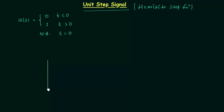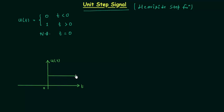So let's plot the waveform of the unit step signal. When time t is less than 0, u(t) is equal to 0, and when time t is greater than 0, u(t) is equal to 1. So we have 1 as the value of u(t) when time t is greater than 0. When t is equal to 0, u(t) is not defined. This is the waveform of the unit step signal, and for simplicity we consider u(t) equal to 1 when time t is equal to 0.